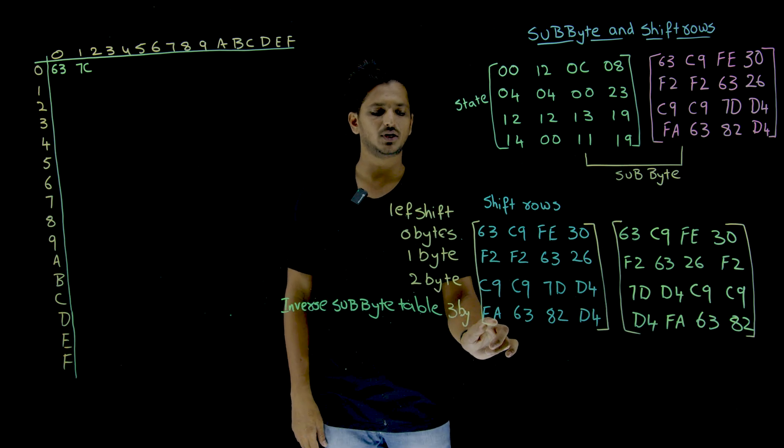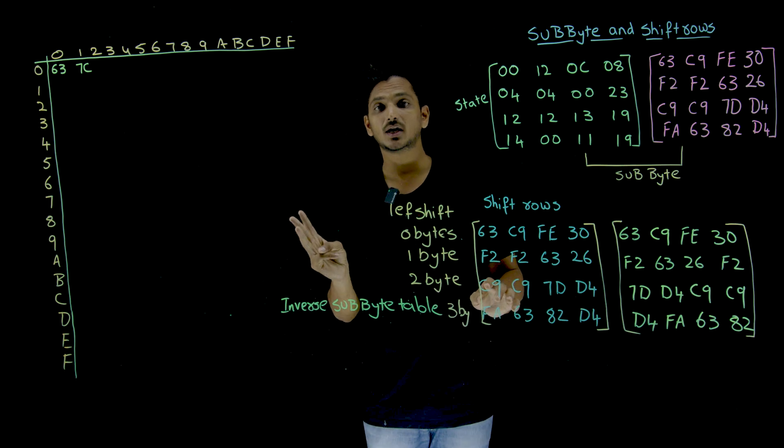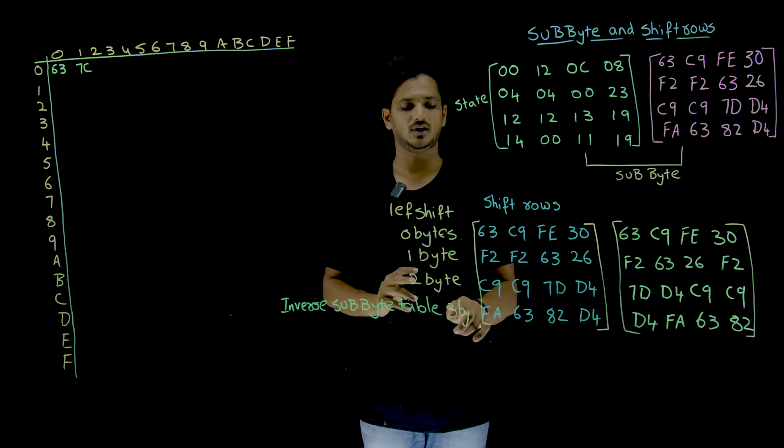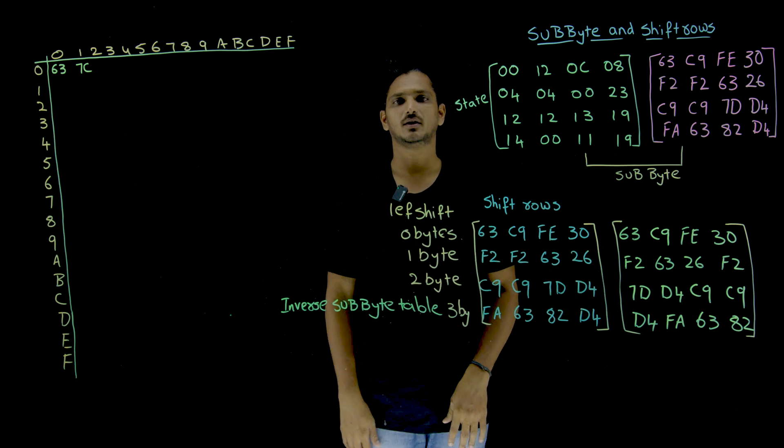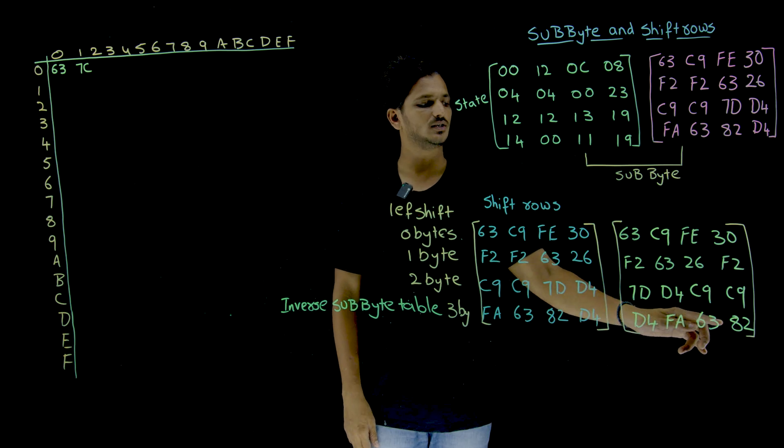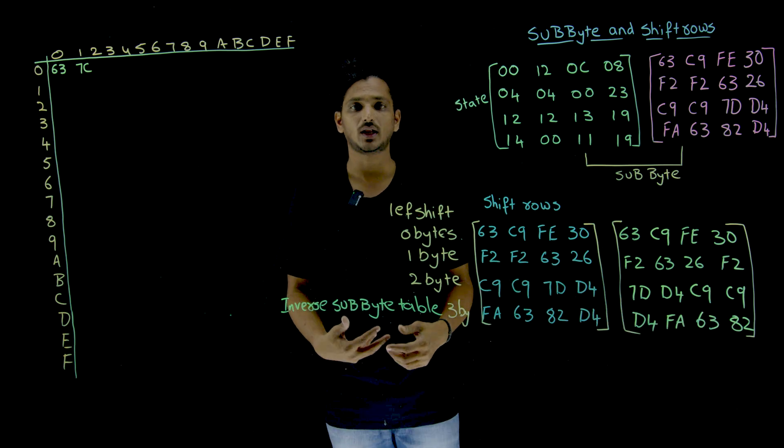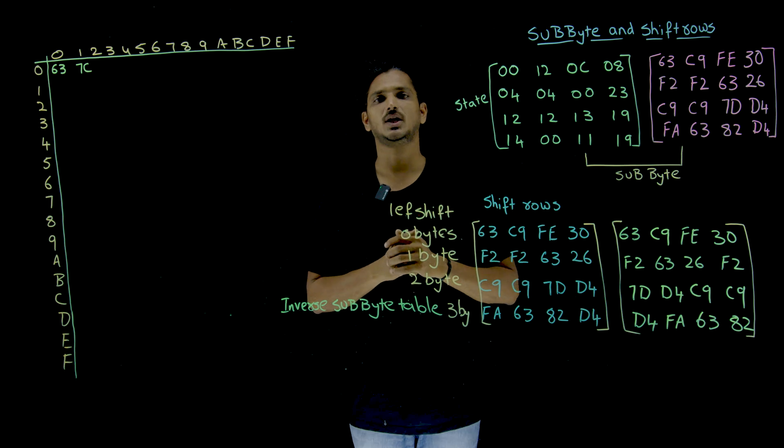The last line is going to be done three byte left shift. Means FA, 6,3, 8,2 will come out and move to the front. So D4, FA, 6,3, 8,2. This is what happens during the shift row stage.